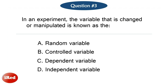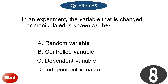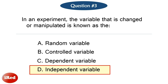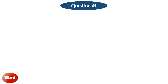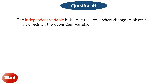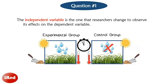Question number 3: In an experiment, the variable that is changed or manipulated is known as the independent variable. The correct answer is letter D. The independent variable is the one that researchers change to observe its effects on the dependent variable. For example, in this experiment, the independent variable is the water received by the plants. The experimental group receives water while the control group does not.